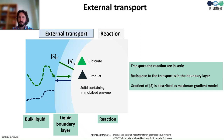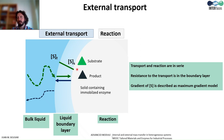In the case of the external transport, the phenomenon occurring is the transport of the substrate from the bulk liquid. In the bulk liquid, the concentration is the same at all points, and the substrate is diffusing through the boundary layer to reach the solid material where the reaction is taking place. So the transport is taking place in series compared with the biochemical reaction. It is relevant to try to quantify the extent of the external transport and to compare it with the rate of the biochemical reaction.